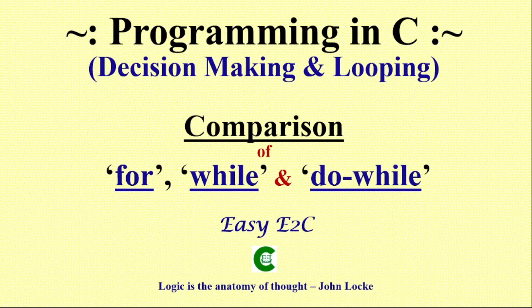In C we have three types of loops: for, while, and do-while. Every loop in a C program has two main parts — the body of the loop and the control statement. The control statement checks some condition and based on that takes a decision whether the execution of statements under that loop will be repeated or the loop will be terminated.